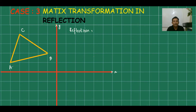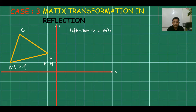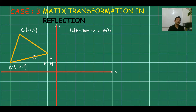Sometimes the coordinates of the object will also be given. For example: A is (−5, 1), B is (−1, 2), and C is (−4, 4). This is how the coordinates are provided. We should know what the matrix of the x-axis is, as it will not be given in the exam.